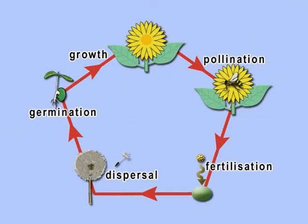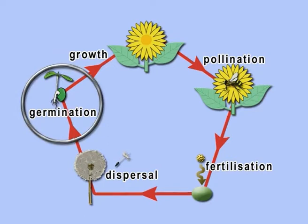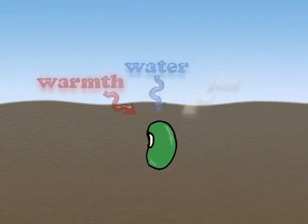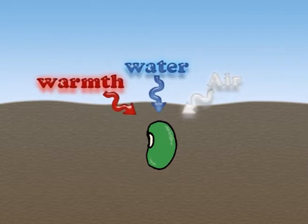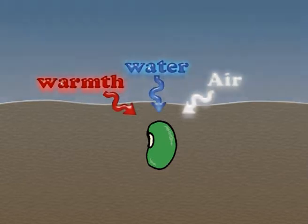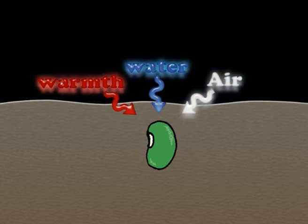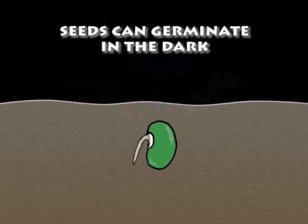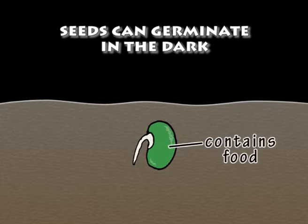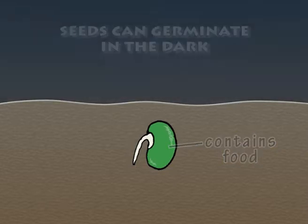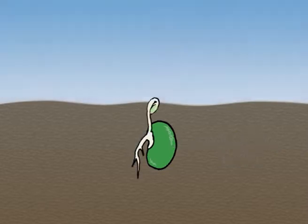After dispersal of the seeds, germination takes place. To start growing, a seed needs warmth, water and air. However, seeds do not need light to germinate, as they will germinate just as well in the dark. The reason for this is that the seed contains a food store the plant can live on, as the root grows down into the soil, and the shoot grows up to break through the surface of the soil.